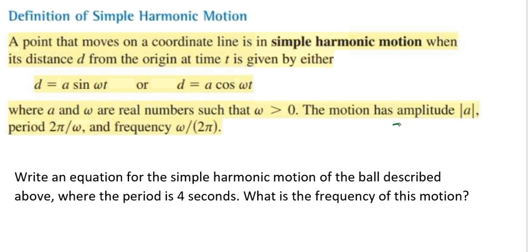So we have our amplitude. And let's use a different color. Our amplitude. And we have a period of 2π divided by ω. And we have a frequency of ω divided by 2π.